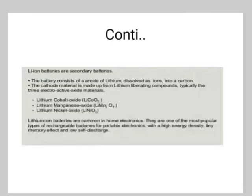The lithium-ion battery is a secondary battery. It consists of an anode of lithium dissolved as ions into carbon. The cathode material is made up of lithium-liberating compounds — typically the three electroactive oxide materials: lithium cobalt oxide, lithium manganese oxide, and lithium nickel oxide. Lithium-ion batteries are common in home electronics and are one of the most popular types of rechargeable battery for portable electronics.